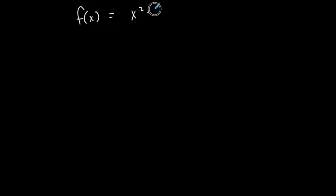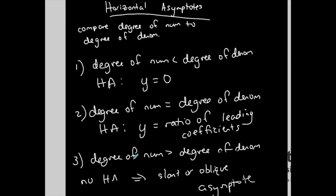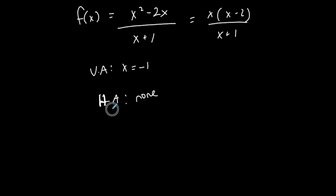If we have x squared minus 2x over something, if this is a rational function, simplifying it still leaves a vertical asymptote at x equals negative 1. Do I have a horizontal asymptote? I have to compare the degrees. The degree of the numerator is greater than the degree of the denominator — that's Case 3 — so I don't have a horizontal asymptote. Instead, I have a slant or oblique asymptote, and I will show you how to find that in the next video.